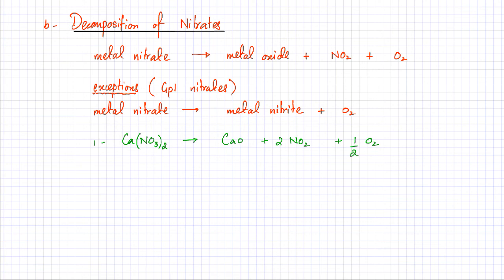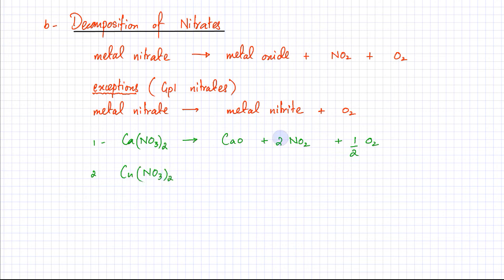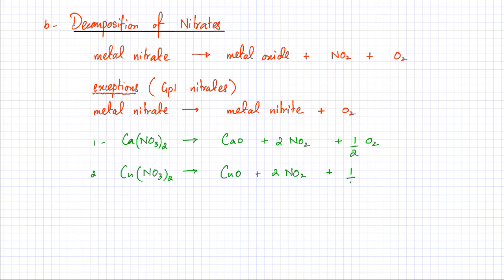Another example: copper nitrate. Copper is 2+ and NO3⁻ is 1−, so the formula is Cu(NO3)2. It produces copper oxide plus NO2 gas, and half a molecule of oxygen for a balanced reaction.